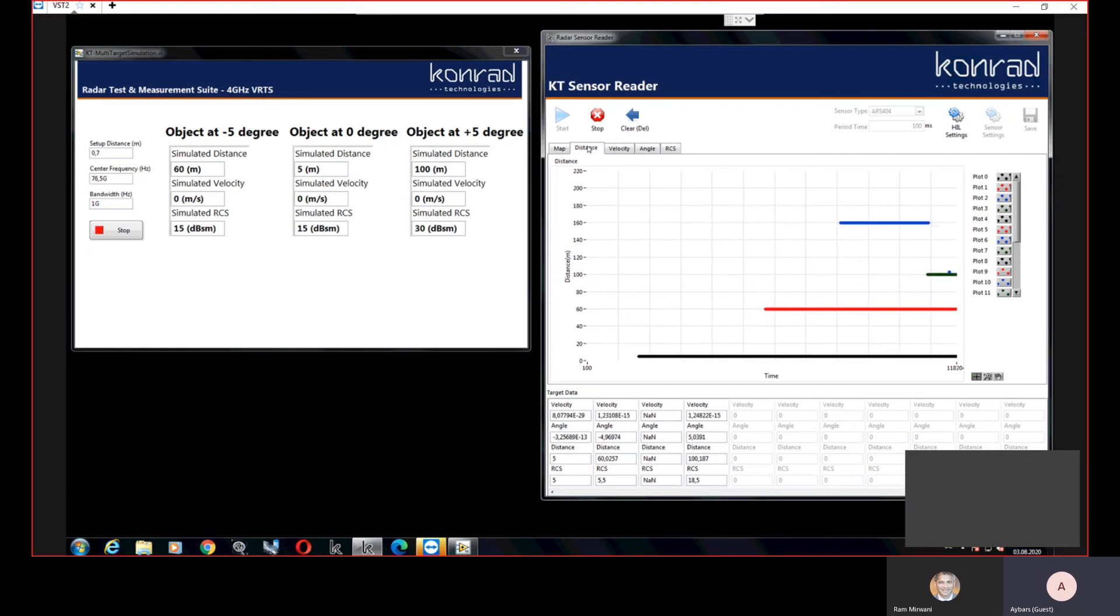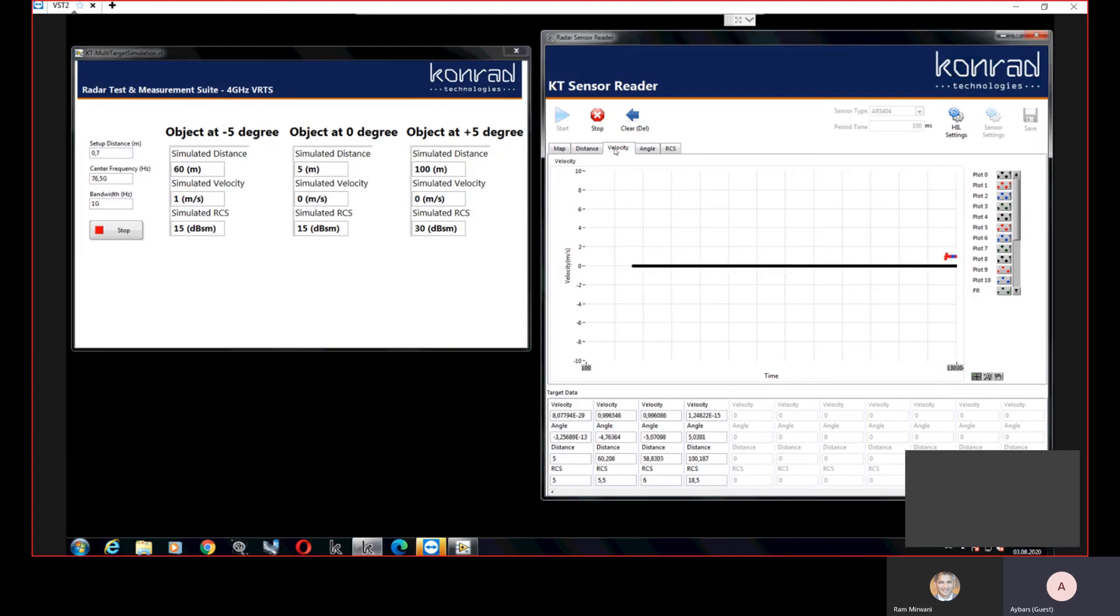And now I like to add the Doppler effect. Now I change my simulated velocity for the object at minus five degree and I show the velocity plot and as you can see the velocity reading.